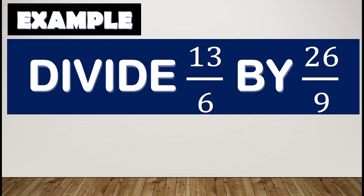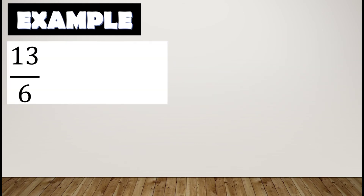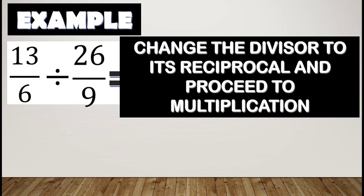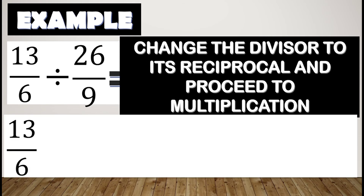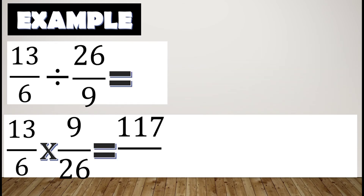Let's have our third example: divide thirteen over six by twenty-six over nine. Again, thirteen over six divided by twenty-six over nine — we change the divisor to its reciprocal and proceed to multiplication. The divisor is twenty-six over nine, and its reciprocal is nine over twenty-six. We change the division sign to a multiplication symbol, and multiplying gives us one hundred seventeen over one hundred fifty-six.